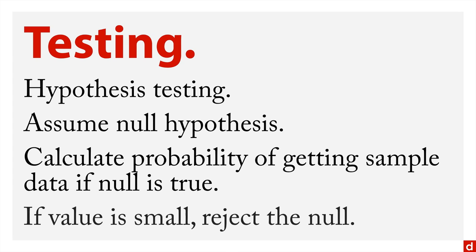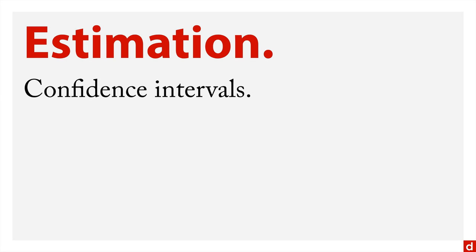And if that probability value is small — usually less than 5% — then you reject the null hypothesis, which says really nothing's happening, and you infer that there is a difference in the population. The other most common version is estimation, which for instance includes characterizing confidence intervals — that's not the only version of estimation, but it's the most common.